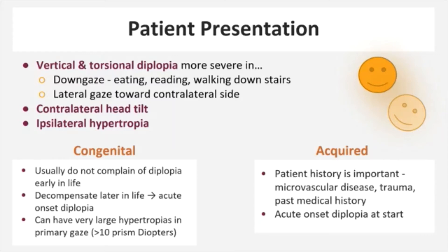Congenital and acquired palsies do present slightly differently. Patients with congenital palsies typically learn how to control their diplopia and sometimes won't present until later in life when they lose that control and have sudden onset diplopia. A good way to rule in a congenital palsy would be to ask the patient if they've been told throughout their life that they have a head tilt or if they have numerous pictures of them tilting their head when younger. Patients with congenital palsies are notorious for having very large hypertropias in primary gaze, at least 10 prism diopters. Patients with acquired palsies are going to complain of sudden onset diplopia — it's going to be extremely bothersome to them. With these patients, history is extremely important and they will likely need brain imaging.